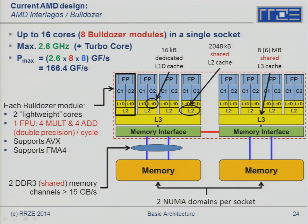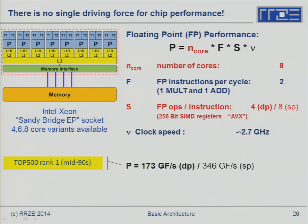Summarizing the drivers of performance on a single Sandy Bridge socket with 8 cores: in the 1980s–90s, clock speed was the driving force, doubling every 12–24 months. Today, the total floating-point performance of a chip is built from four factors, of which clock speed is only one.